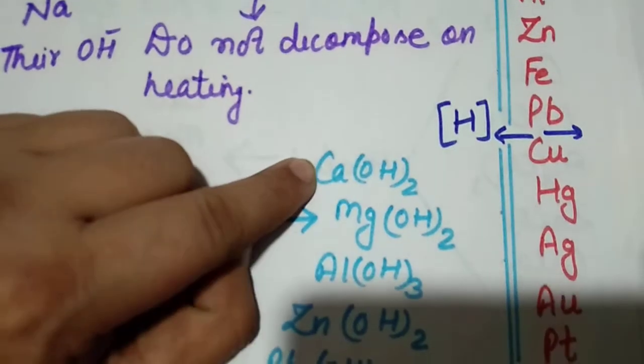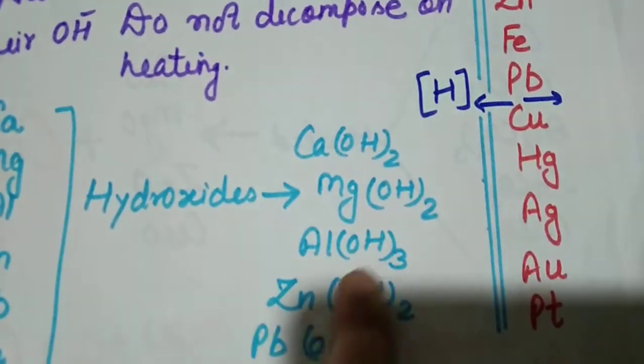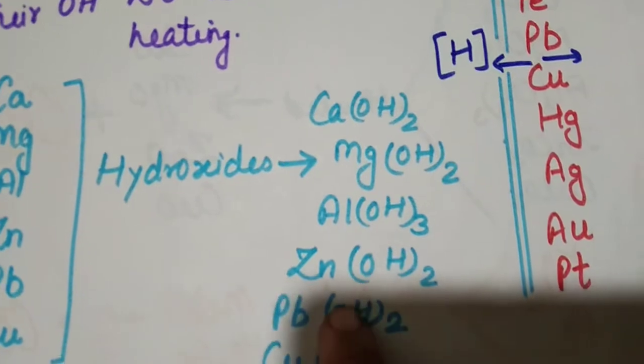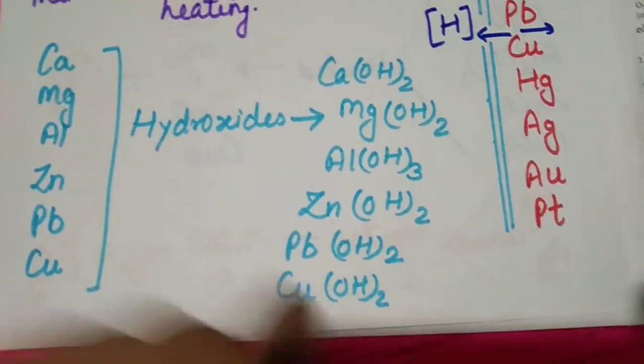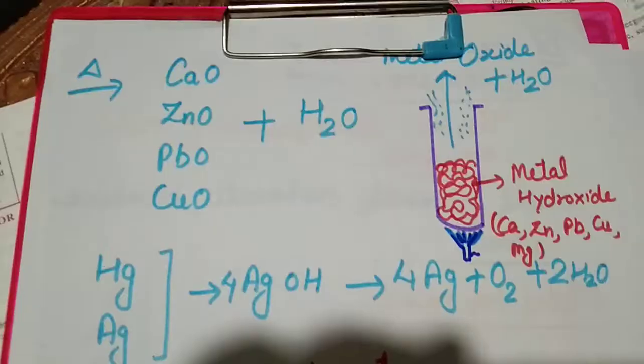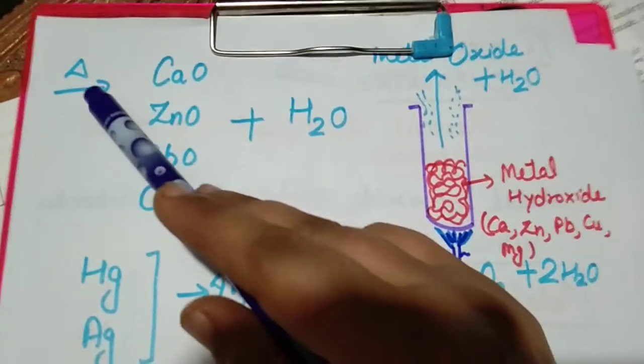Calcium is written like this: calcium hydroxide Ca(OH)2, magnesium hydroxide Mg(OH)2, aluminium hydroxide Al(OH)3, zinc hydroxide Zn(OH)2, lead hydroxide Pb(OH)2 and copper hydroxide Cu(OH)2.